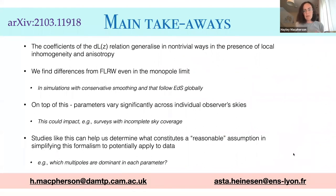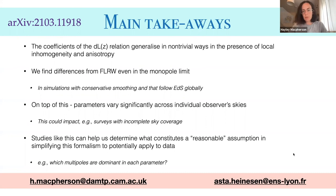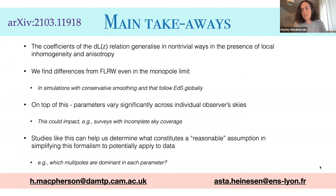To summarize: the coefficients of the luminosity distance-redshift relation generalize in non-trivial ways in the presence of local inhomogeneity and anisotropy. We find differences from the FLRW equivalents even in the monopole limit, and on top of this cosmic variance, the parameters vary quite significantly across individual observer skies — which could significantly impact surveys with incomplete sky coverage. Studies like this can help determine what constitutes a reasonable simplifying assumption in applying Esther's formalism to data. Thank you so much for having us.